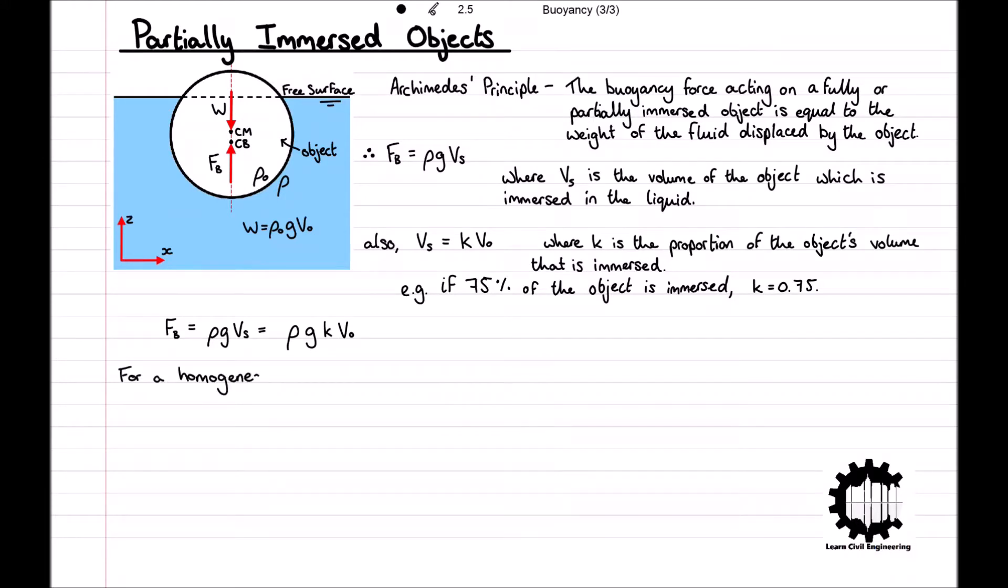For the case where both the object and liquid have uniform densities, the centre of mass of the liquid volume displaced by the object is the same point as the centre of mass of the object.